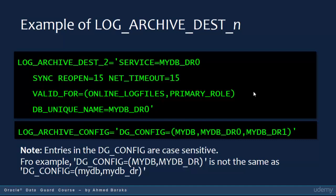A very important parameter that you should configure alongside LOG_ARCHIVE_DEST is LOG_ARCHIVE_CONFIG. This parameter must be set when you use LOG_ARCHIVE_DEST to define standby databases. You only list all the databases included in your Data Guard configuration, so the database can understand all the Data Guard members. In this example, we have one primary database — mydb — and two standby databases — mydb_dr0 and mydb_dr1.